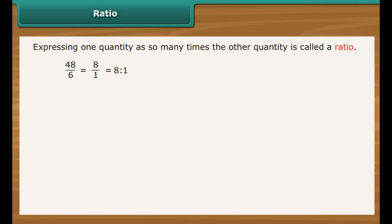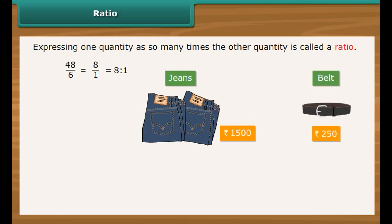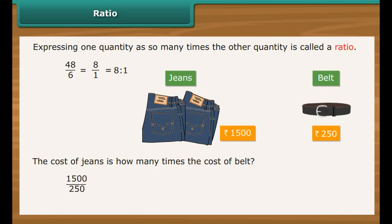Let us look at another example of ratio. Tushar bought a pair of jeans for rupees 1500 and a belt for rupees 250. The cost of jeans is how many times the cost of the belt? To calculate the ratio, first divide 1500 by 250, which is the same as 6 divided by 1. Express it as a ratio: 6 is to 1. Therefore, the pair of jeans is 6 times more costly than the belt.